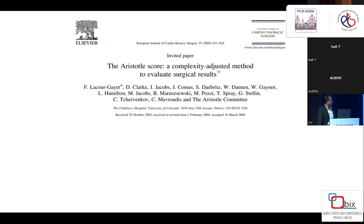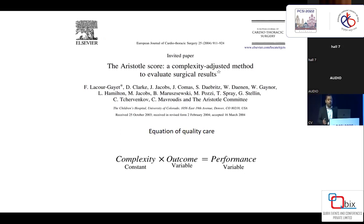Let me go through the Aristotle score. This was introduced in 2004 by Francis Lepo, where a group of people came together to evaluate the performance of either a unit or a person. They came up with a very noble concept known as the equation of quality care: the complexity of a case multiplied by the outcome determines the performance. The complexity is a constant variable — whether you do an arterial switch in Calcutta or Mumbai, the complexity remains the same — but the outcome is variable, and therefore the overall performance will differ.